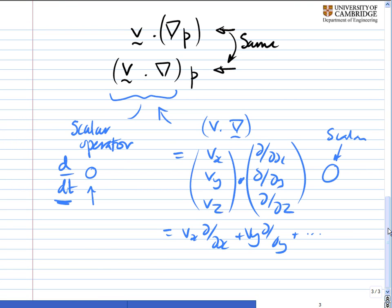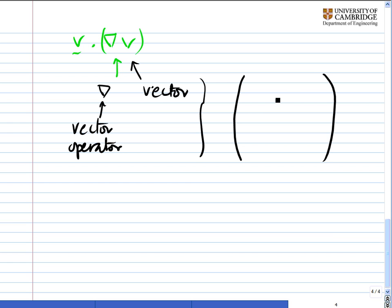As a final point, though, just to add, this is for those who are really interested. v·∇ of v could be written as v·∇v, which begs the question, what is this? ∇ is a vector operator. And it's acting straight away on a vector. This gives you a matrix with nine terms in it.